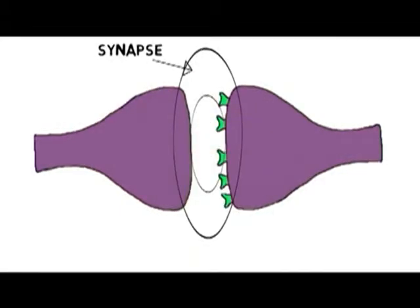The neurons are not actually connected, but are separated by a microscopically small space called the synaptic cleft. The cleft is less than 40 nanometers wide. By comparison, a human hair is about 75,000 nanometers wide.